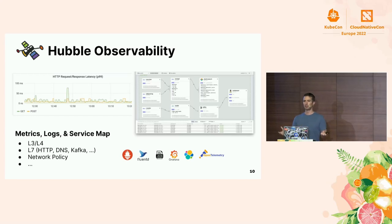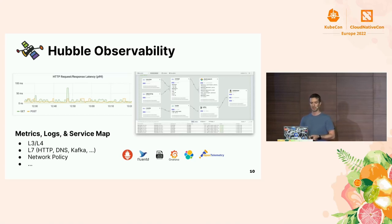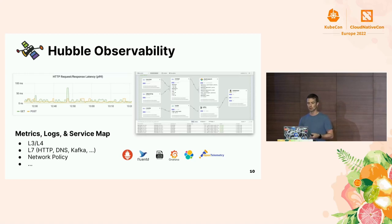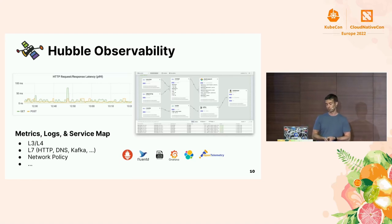Hubble provides metrics, logs, and a service map at layer 3, layer 4, and layer 7. We're seeing an example of Hubble parsing HTTP requests and providing HTTP latency to build a golden signal dashboard. We also have a service map showing what services are talking to each other. You can export metrics and logs via Prometheus, Fluentd, or JSON, and build Grafana dashboards, Elasticsearch exports, and we recently added OpenTelemetry support.